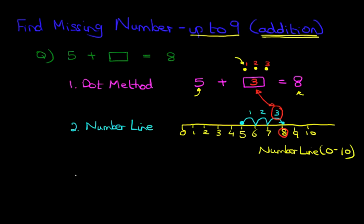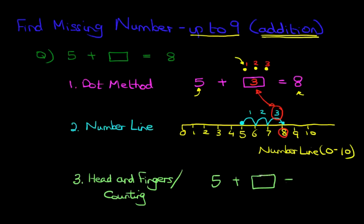We're now going to use our third method we've used before. This is the head and fingers method. And you can also call it counting. Now I'm going to rewrite the question again, just so that we can do some workings. 5 plus something equals 8. Now the head and fingers method, the counting method, works like this. We are starting at number 5. So we're starting at 5. We have to end at 8. So what I want you to do is to hold out your hand, close all the fingers, make it a fist.